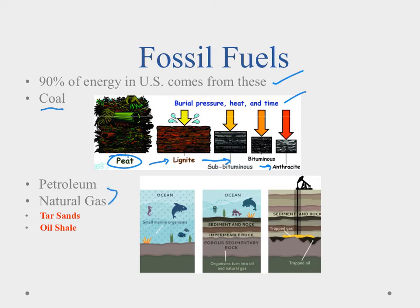Petroleum and natural gas form along the same lines. Once-living things settle to the bottom when they die, and through the same process — applying pressure, heat, and time — these organisms are turned into natural gas and trapped oils. One concern with fossil fuels is what happens when we run out. Currently, they're looking at tar sands and oil shale, but both are very messy and environmentally polluting ways of collecting petroleum products. While they'll fulfill the need for now, it might be time to start looking for cleaner alternatives.